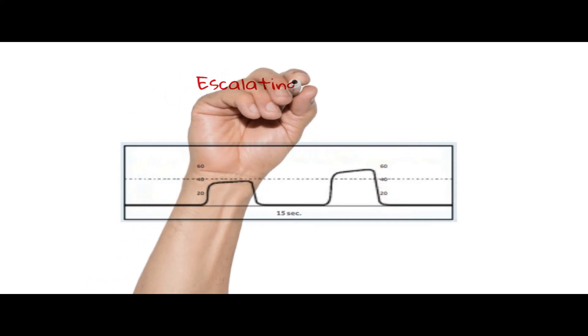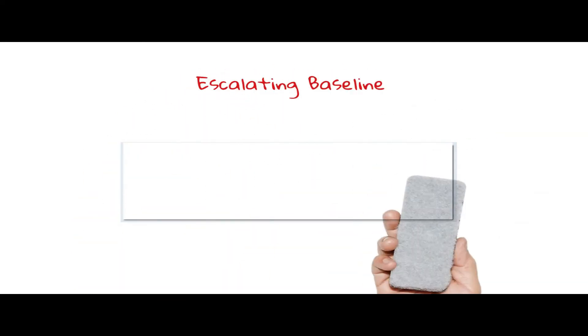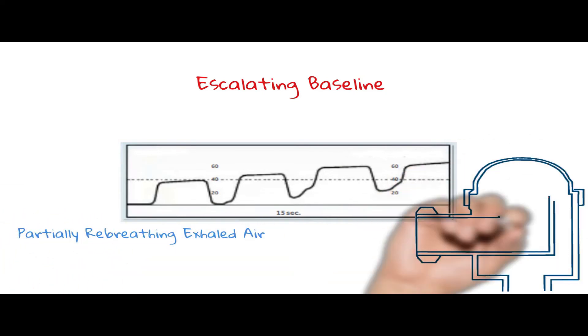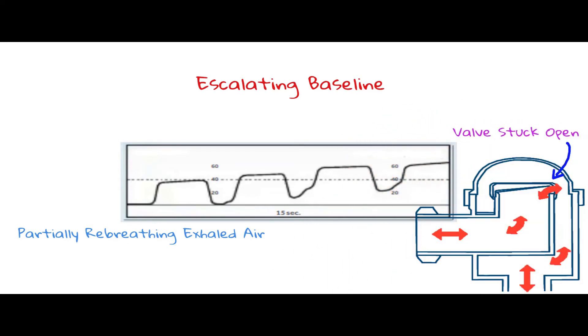Escalating baseline. An escalating baseline is occasionally seen in mechanically ventilated patients. This usually results from partially rebreathing exhaled air and it usually indicates an incompetent inspiratory or expiratory valve. It may also be the result of insufficient expiratory time or insufficient inspiratory flow.